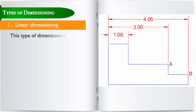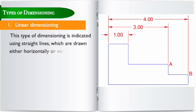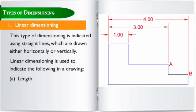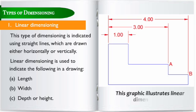Linear dimensioning. This type of dimensioning is indicated using straight lines, which are drawn either horizontally or vertically. Linear dimensioning is used to indicate the following in a drawing: 1. Length. 2. Width. 3. Depth or height. This diagram illustrates linear dimensioning.